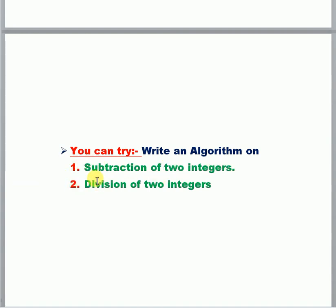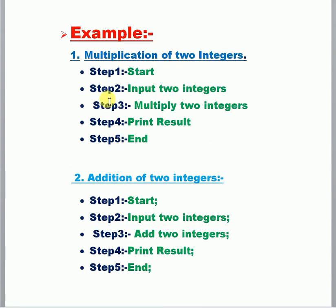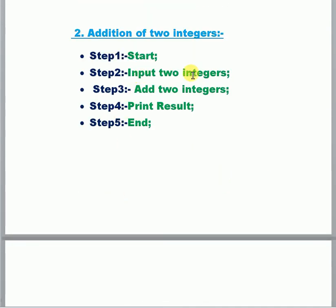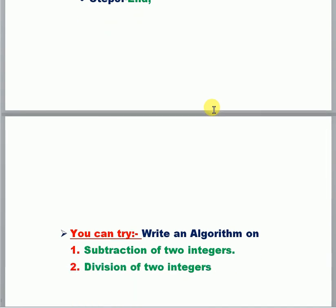Here is another example: subtraction of two integers and division of two integers. For subtraction of two integers, same as before: Start, Input two integers, then Subtract two integers, then Print result. Which integer is greater and which is less will be discussed later when we go to do the coding program.